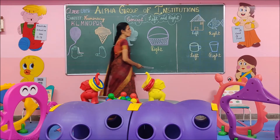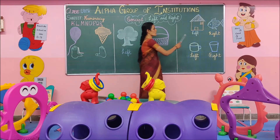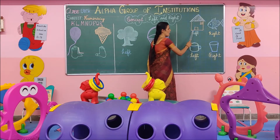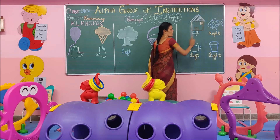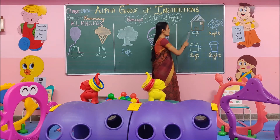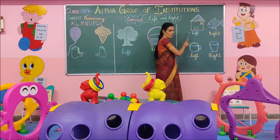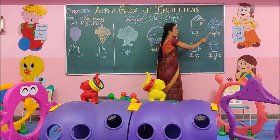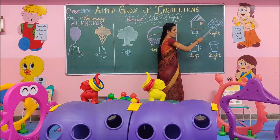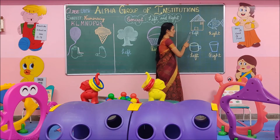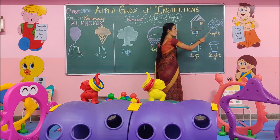Now, what are these? These are a hut and a fish. Where is the hut? It is on the left hand side. Where is the fish? It is on the right hand side. The hut is on the left hand side and the fish is on the right hand side.